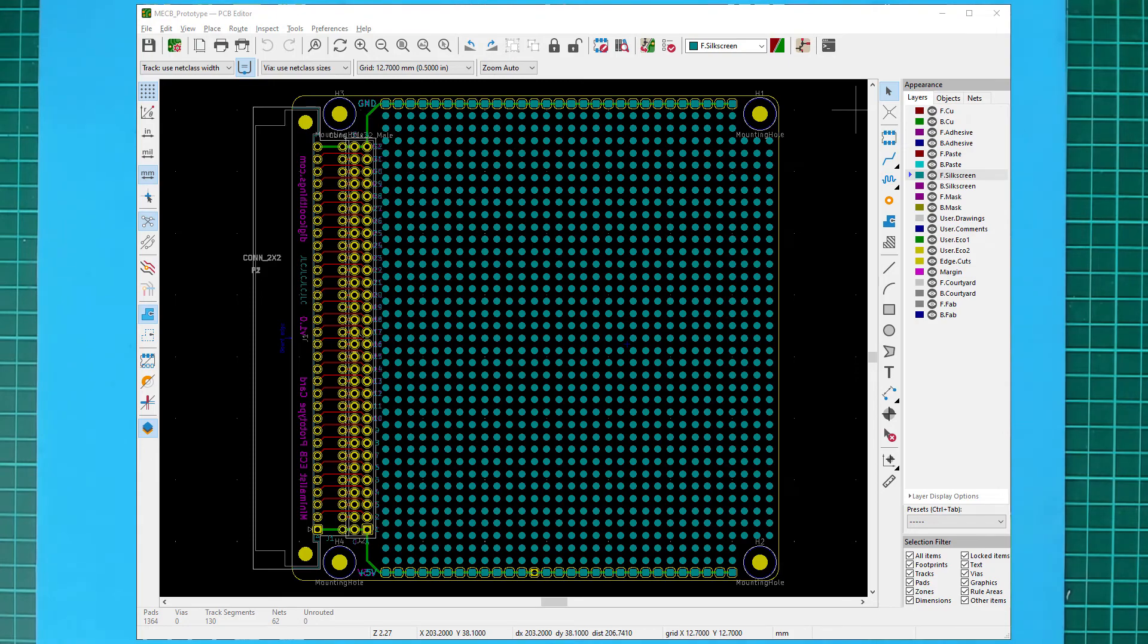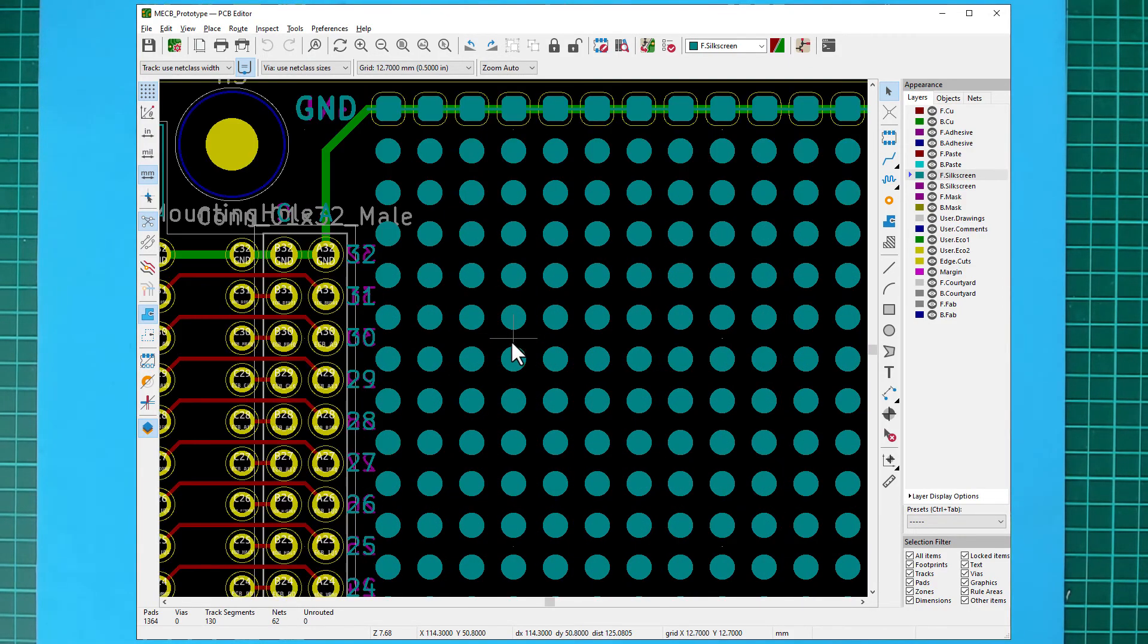And we also have the ground and 5 volt power bars along the top and bottom edges of the board layout. Finally, if I zoom in, you can see the header pin labelling fits efficiently between the grid holes without consuming any grid space. The labelling is repeated on both sides of the PCB.